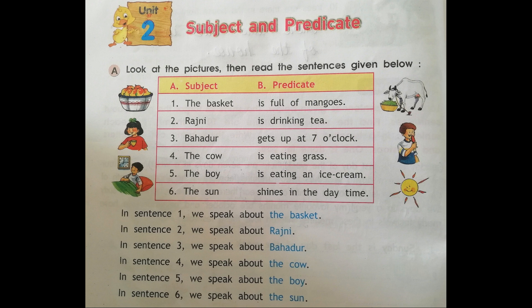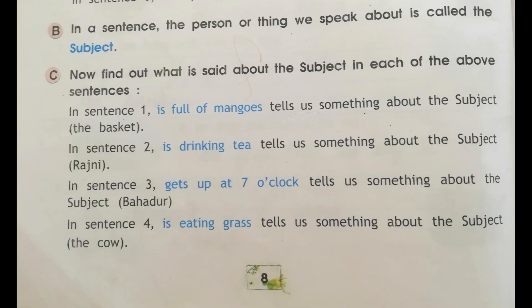In sentence 1, we speak about the basket. In sentence 2, we speak about Rajni. In sentence 3, we speak about Bahadur. In sentence 4, we speak about the cow. In sentence 5, we speak about the boy. In sentence 6, we speak about the sun. In a sentence, the person or thing we speak about is called the subject.